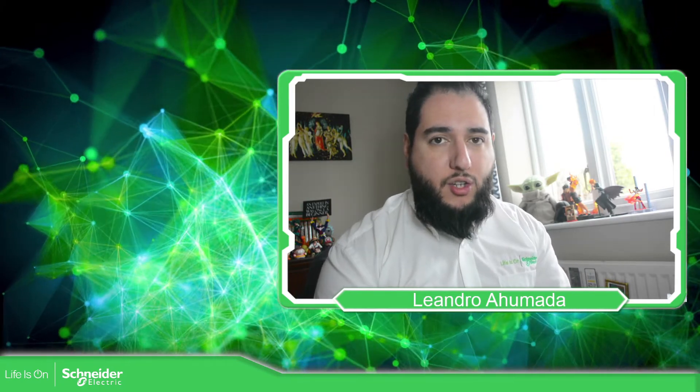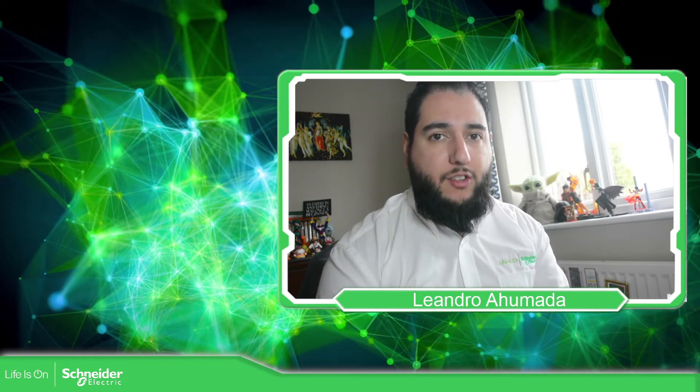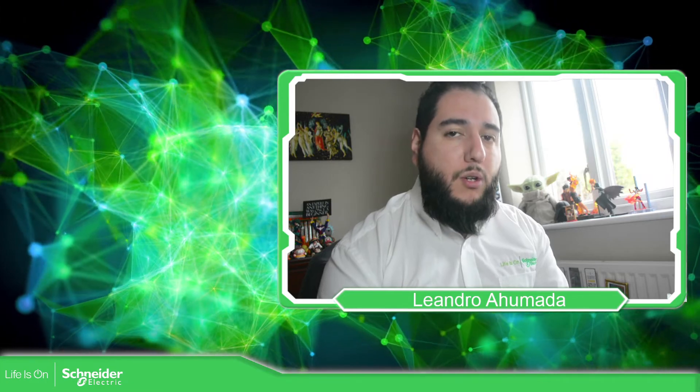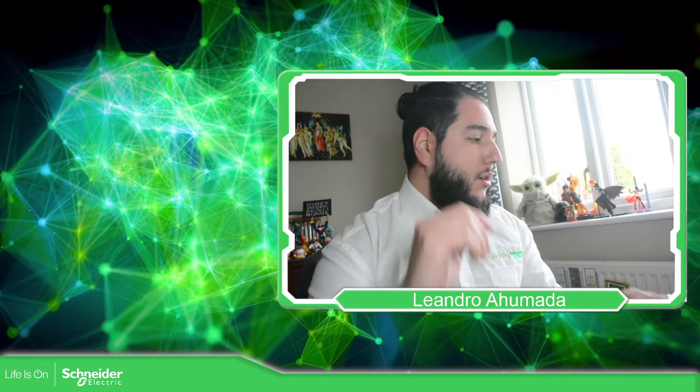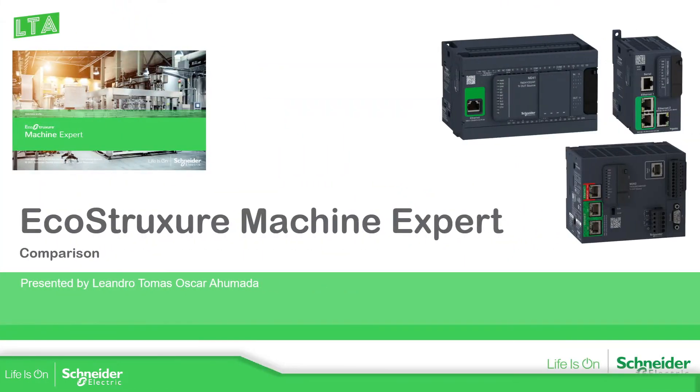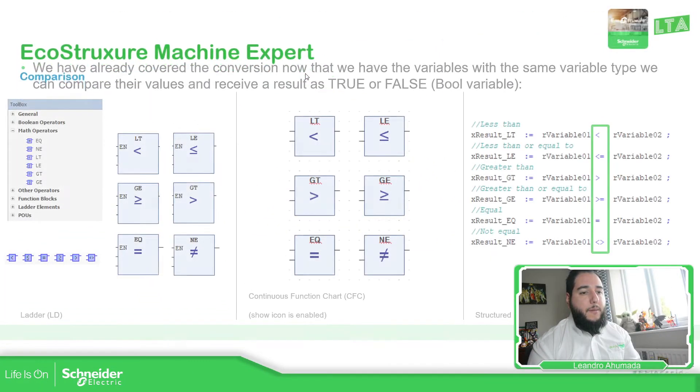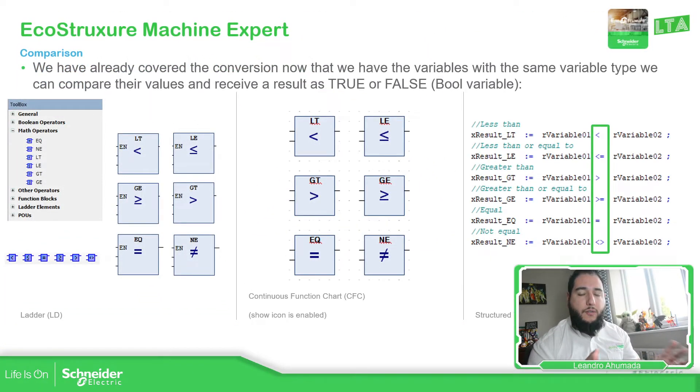Hello everybody, welcome back to another edition of the EcoStructure Machine Expert training. In this video, what we're going to see is how we can work with the comparison blocks and functions that we have in the software. So let's go to the presentation. Here we can see the, I'm going to focus only in three different languages that we have in Machine Expert, which is the ladder, the CFC and the Structured Text.